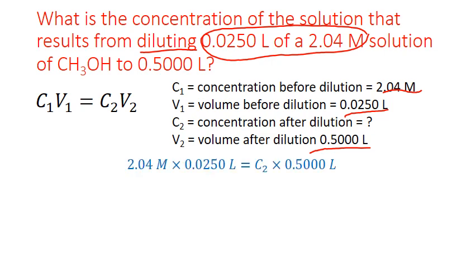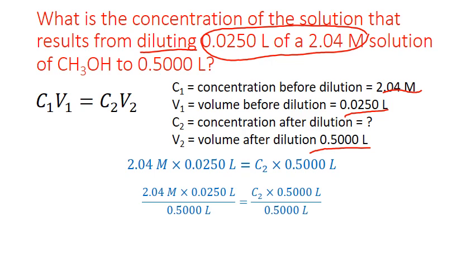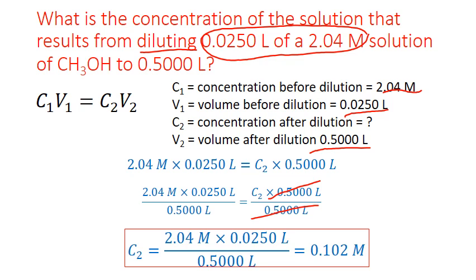Plugging values into C1V1 = C2V2 and dividing both sides by 0.5 liters: C2 = (2.04 mol/L × 0.025 L) / 0.5 L. The liter units cancel, leaving mol/L, and the final concentration is 0.102 mol/L. The least number of significant figures in the original values is three, and the answer already has three significant figures, so no further rounding is needed.